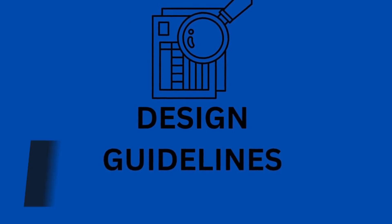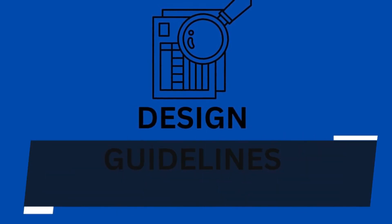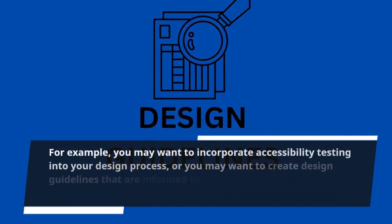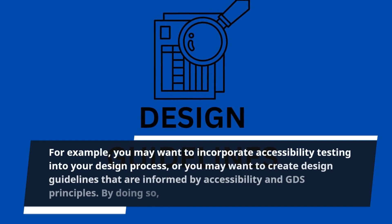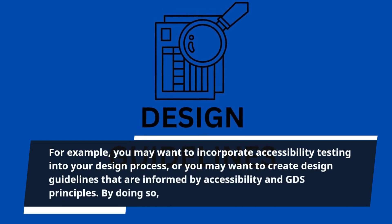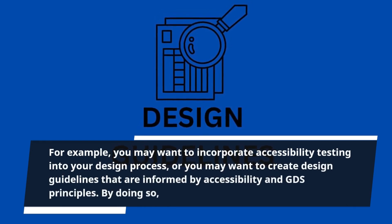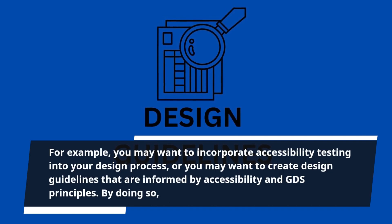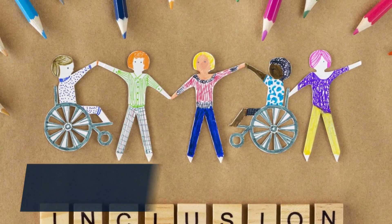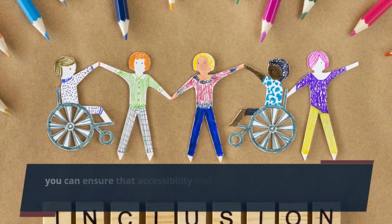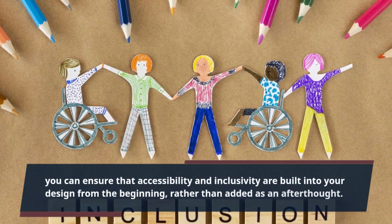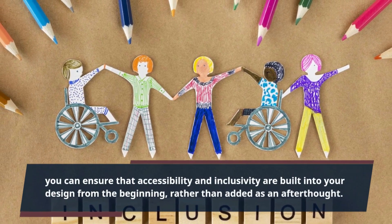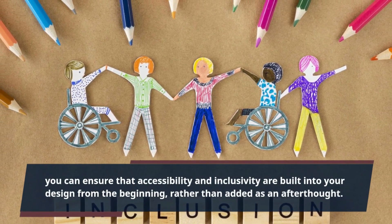For example, you may want to incorporate accessibility testing into your design process, or you may want to create design guidelines that are informed by accessibility and GDS principles. By doing so, you can ensure that accessibility and inclusivity are built into your design from the beginning, rather than added as an afterthought.